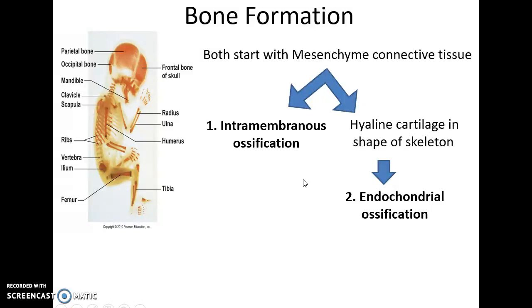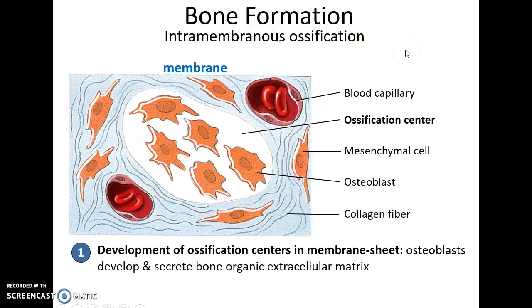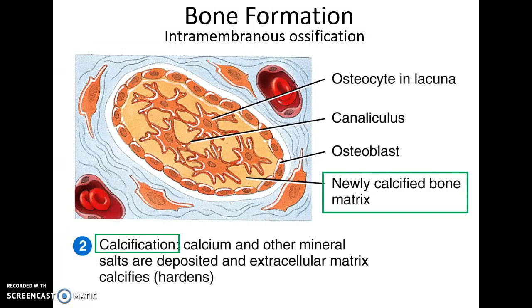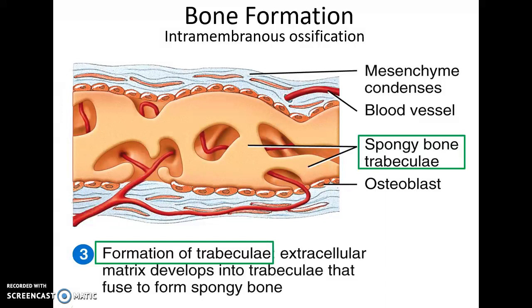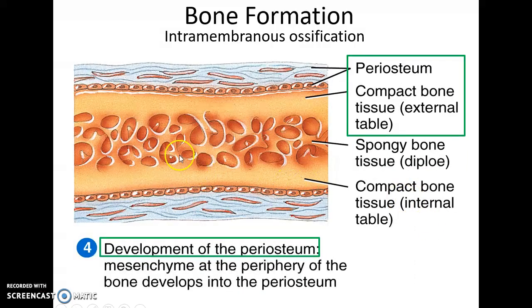Bone formation occurs through one of two processes: intramembranous ossification or endochondral ossification. The flat bones of the skull form via intramembranous ossification, starting with a large sheet of mesenchyme connective tissue. Ossification centers develop within this sheet where osteoblasts produce the organic bony matrix that collects calcium and phosphate minerals. This spreads outward, some osteoblasts become osteocytes within lacunae, until ossification centers merge into a large sheet of spongy-like bone. Continued development produces two sheets of compact bone above and below the central spongy bone, with periosteum on the outside.